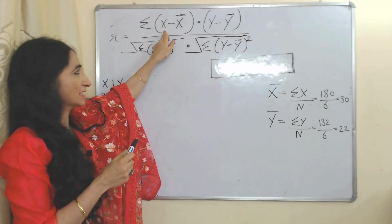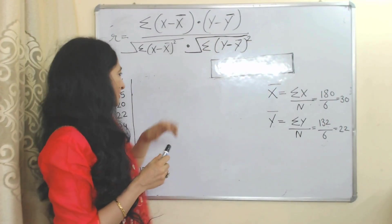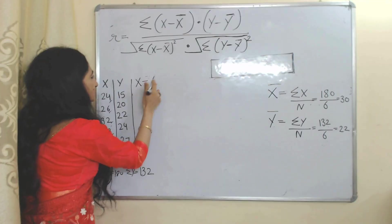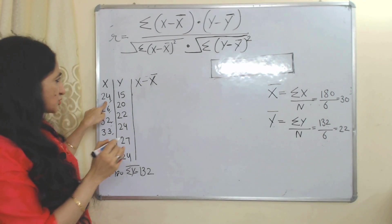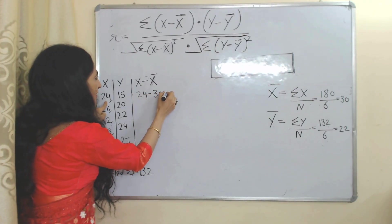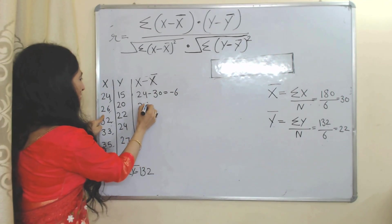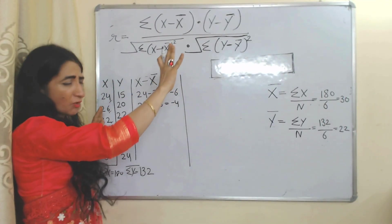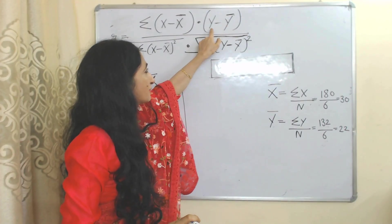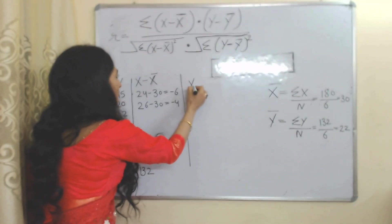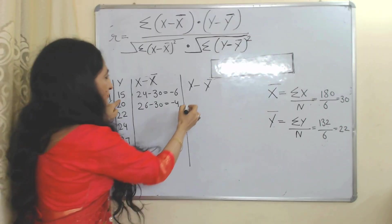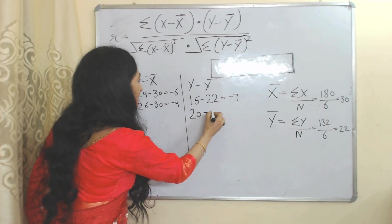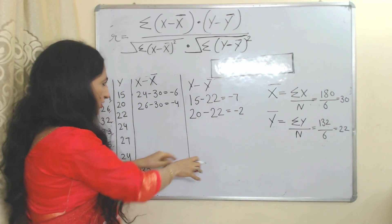According to the formula, we will subtract x̄ from each value of x, and ȳ from each value of y. In the first case, x is 24 and x̄ is 30, giving −6. For y, the first value is 15 and ȳ is 22, giving −7. The second y value is 20 minus 22 equals −2, and so on for all values.